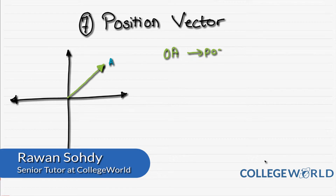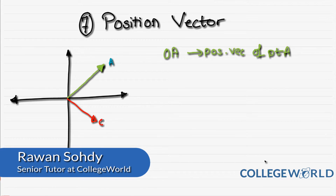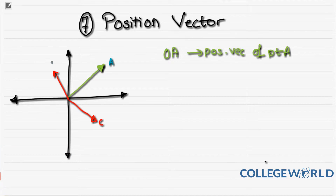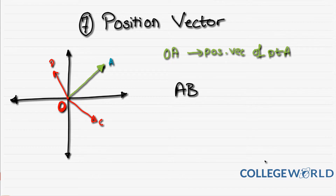So OA is called the position vector of point A. You can do the same for any point — you can have the position vector of B, C, D, or anything, as long as it starts from your origin and ends at that point. This becomes very important when you want to find a vector AB.